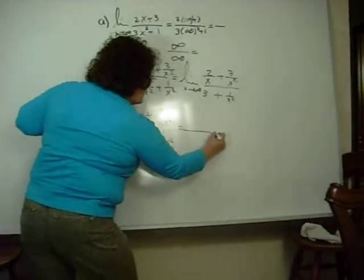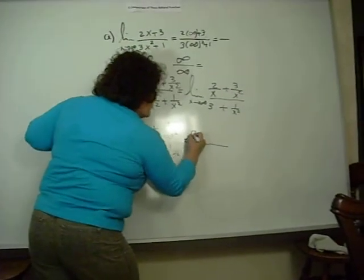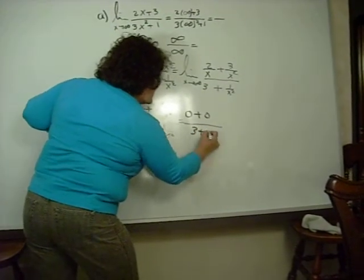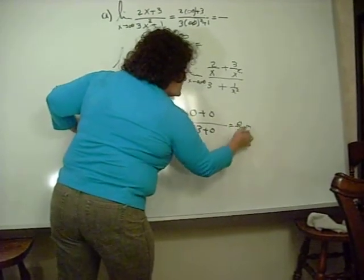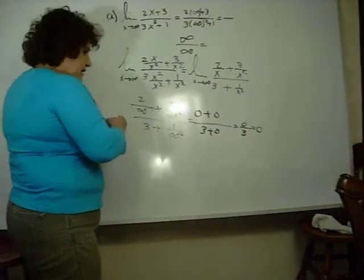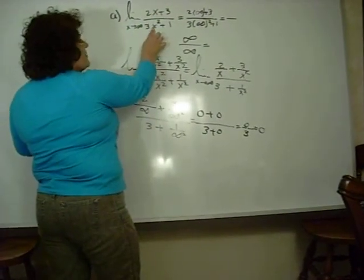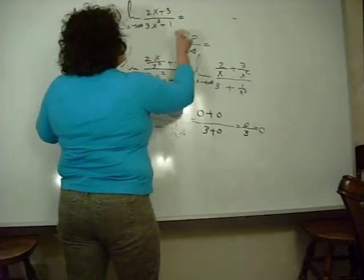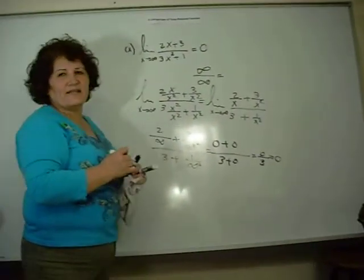Two divided by a very large number approaches zero, so we get zero plus zero over three plus zero, which is zero over three. Zero divided by anything is zero. So the answer is zero. From now on, remember: if the power of the numerator is less than the power of the denominator, the limit as x approaches infinity is always zero. You can memorize this rule.